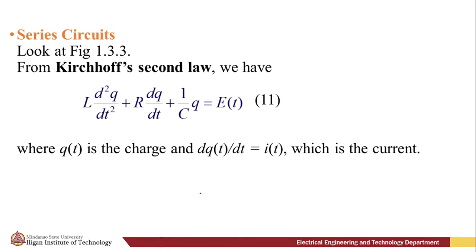Next, we have series circuits. From Kirchhoff's second law, we have this equation: L(d²q/dt²) + R(dq/dt) + (1/C)q = E(t), where q(t) is the charge and dq(t)/dt is our current, or the change in charge with respect to time is our current i(t).